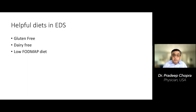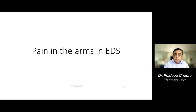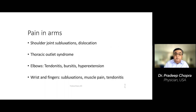A gluten-free diet usually works well. A dairy-free diet works very well. What has really worked best in these patients is a low FODMAP diet — it's a complicated process to explain, but if you Google it there's plenty of information. Moving on, pain in the arms can have many reasons: joints can sublux, there can be tendonitis, hyperextension of the elbows causing nerve stretching, or thoracic outlet syndrome where the nerve is pinched.